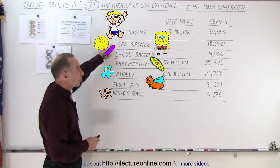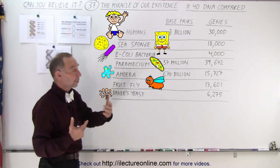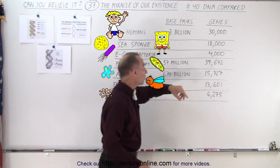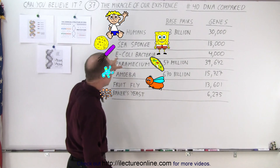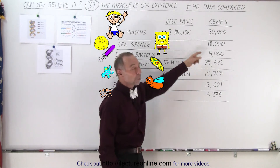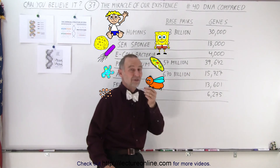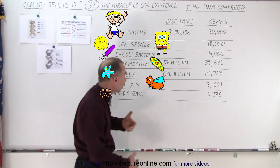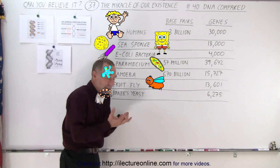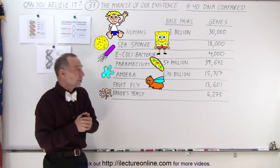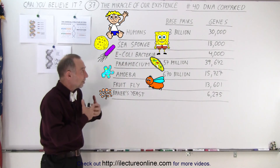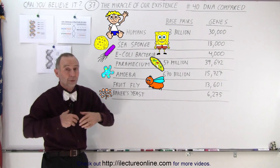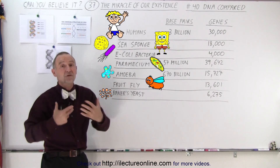Compared to the sea sponge, which is a relatively simple organism, it has 18,000 genes, and E. coli bacteria has about 4,000 genes. So even though they're simple life forms — especially E. coli bacteria, which is among the simplest life forms on Earth — they still contain thousands upon thousands of genes in order to build their structure.